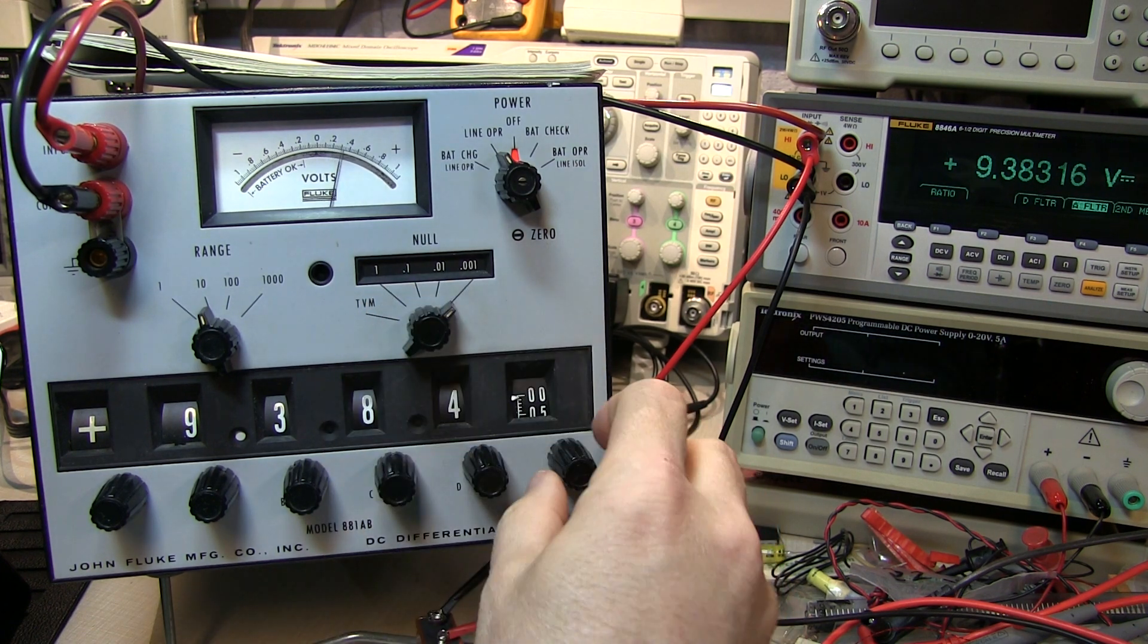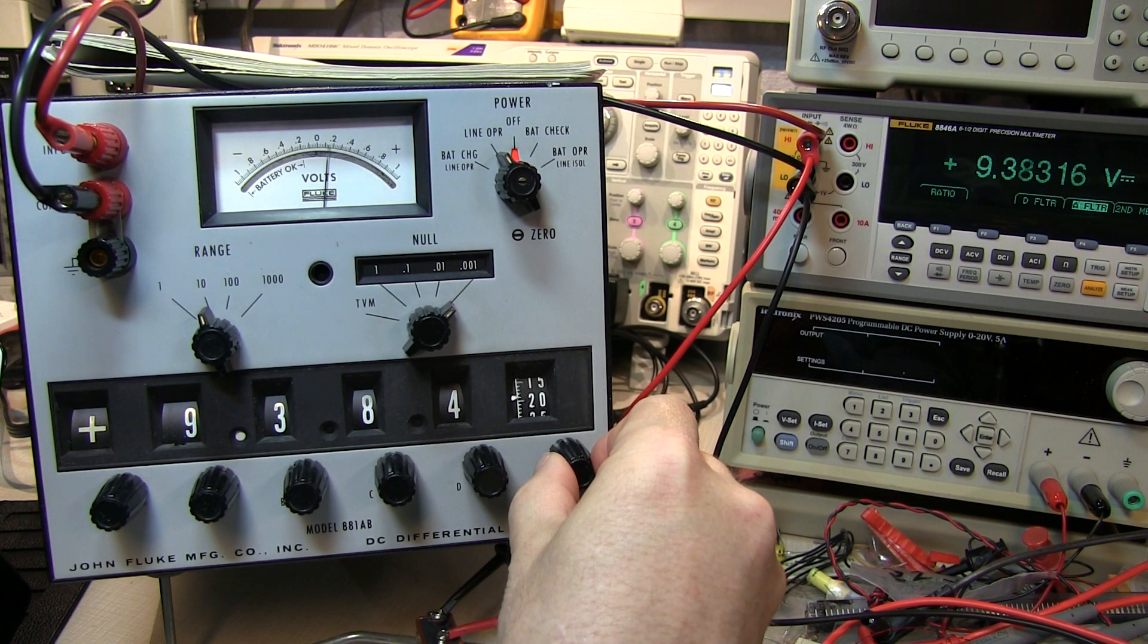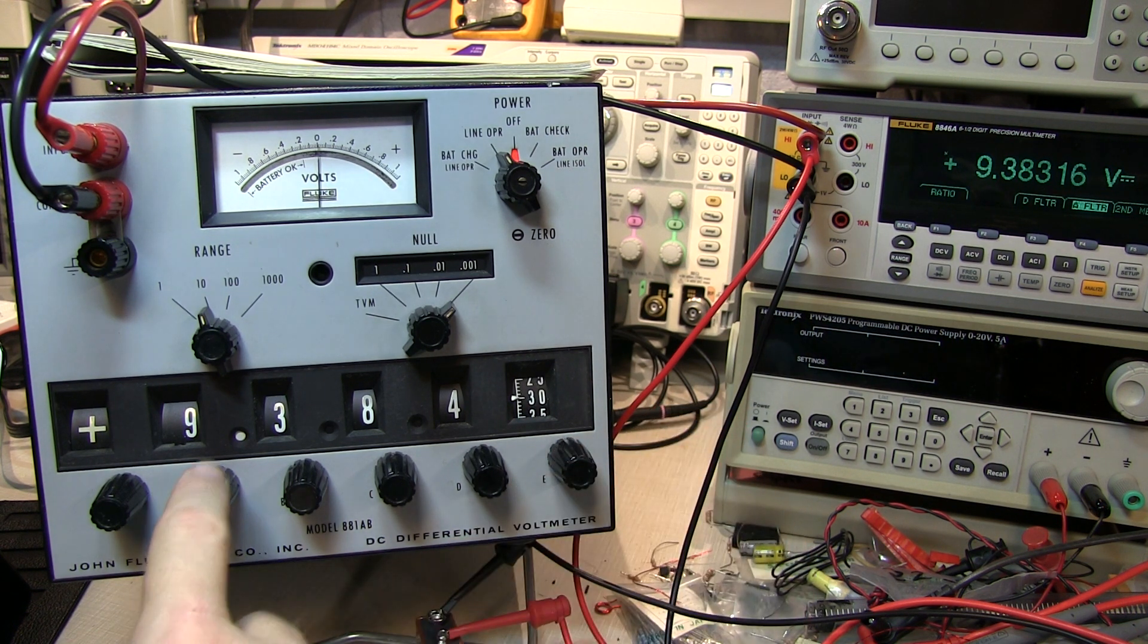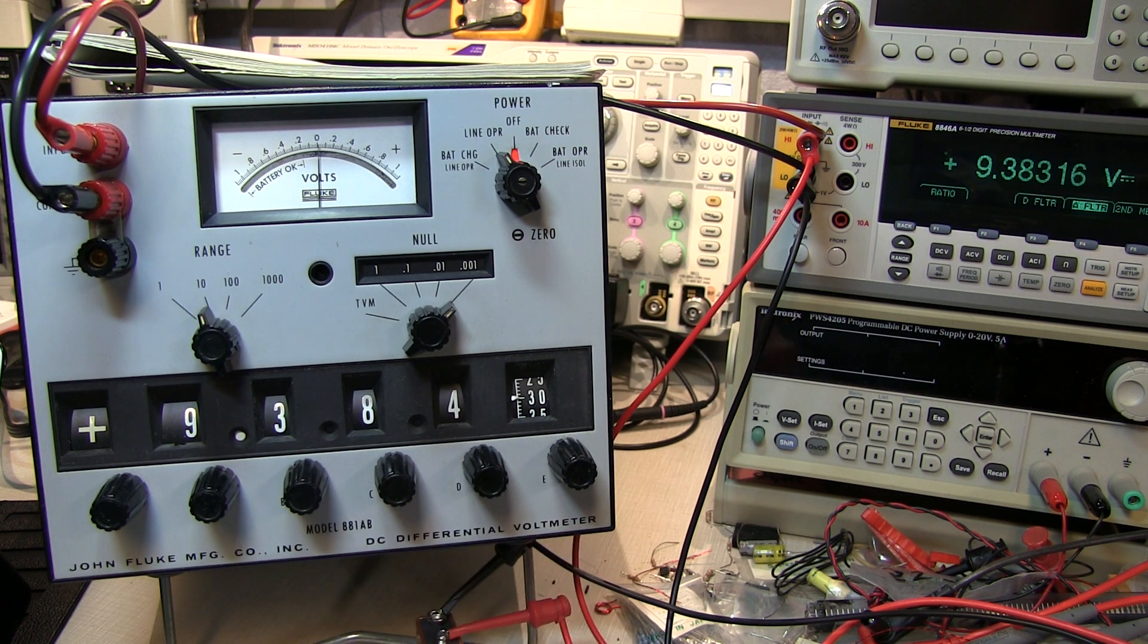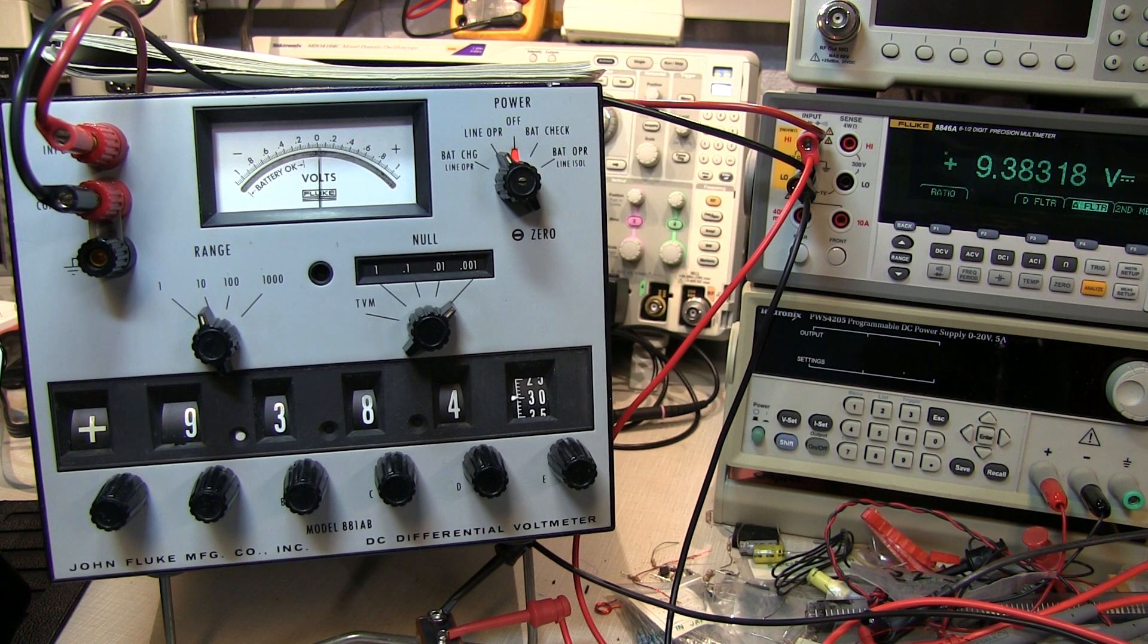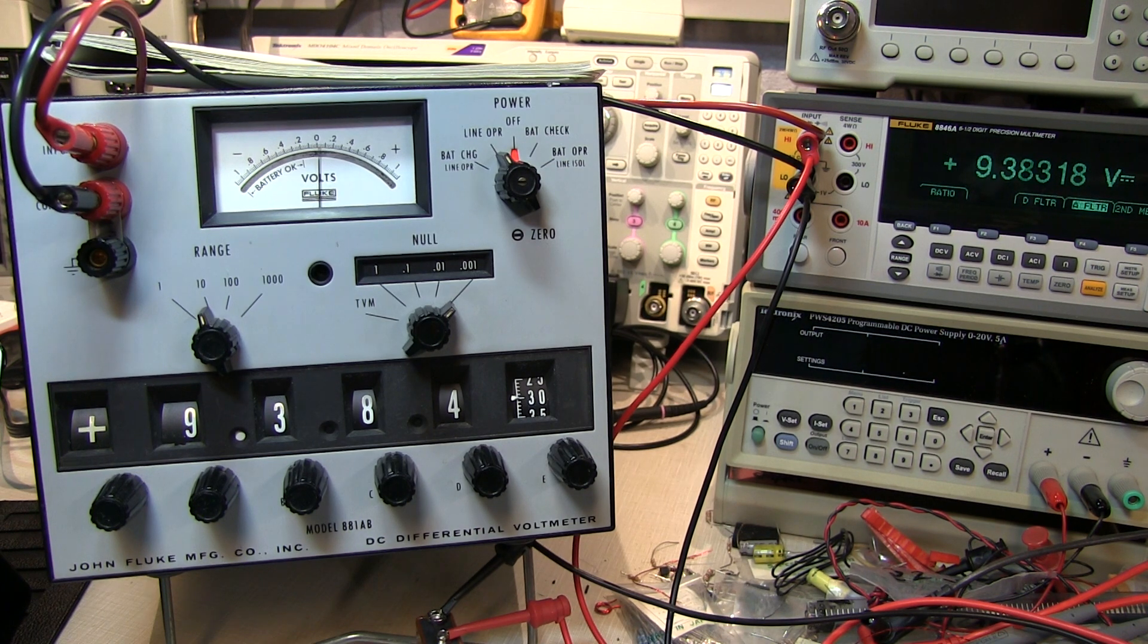Let's go to our next range here and see if we can zero it out with the vernier down here. That's pretty stable. We're reading 9.3843 and if we look over here we're seeing 9.38317. So we're only off by a little more than a millivolt on a 10 volt scale and that's pretty good.